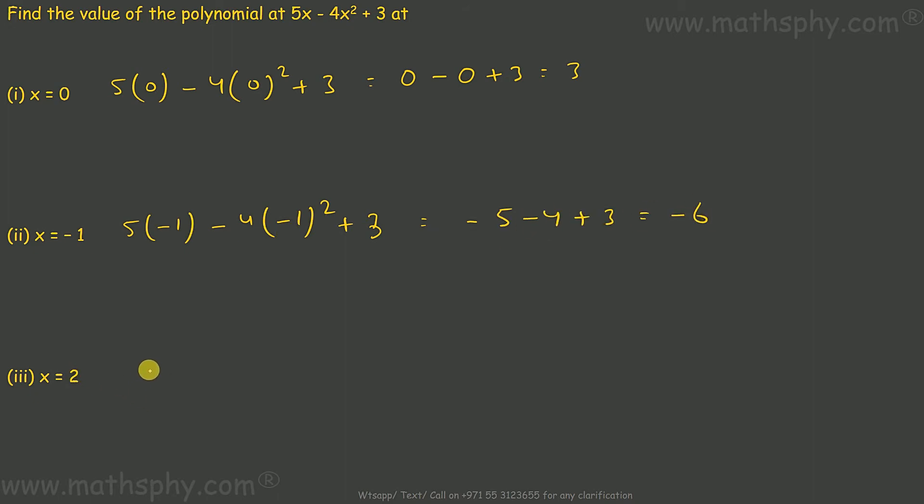x is 2, so 5 into 2 minus 4 into 2 square plus 3. 5 into 2 is 10, minus 2 square is 4, 4 into 4 is 16, plus 3. So this will be 13 minus 16 gives you negative 3.